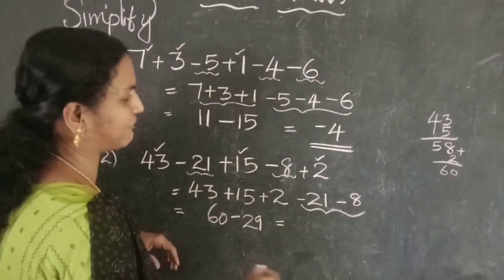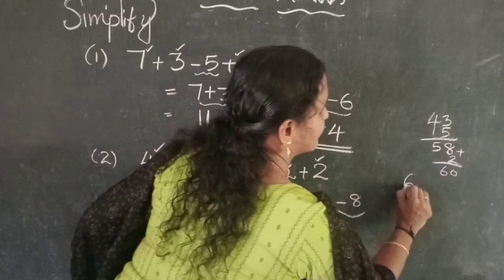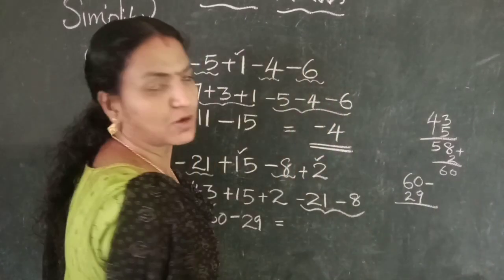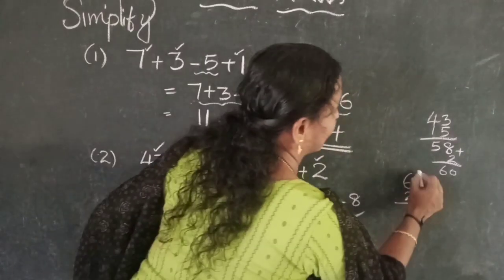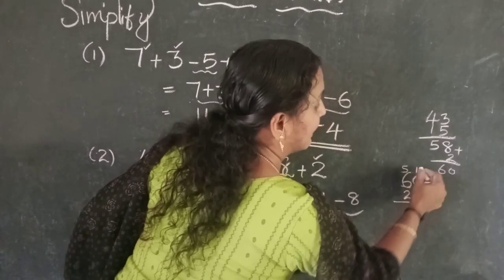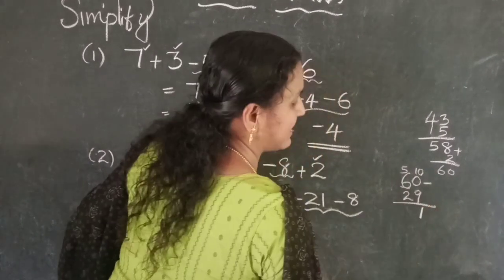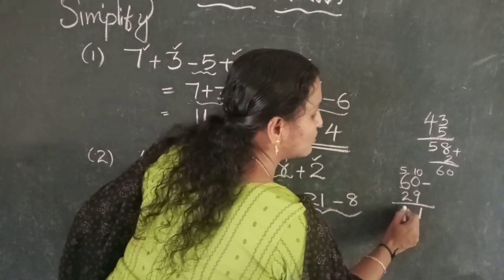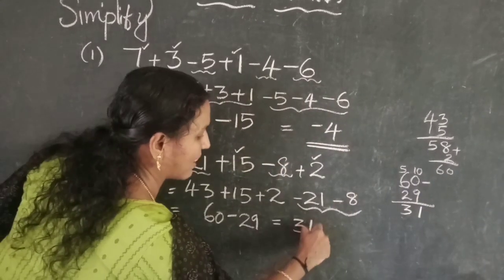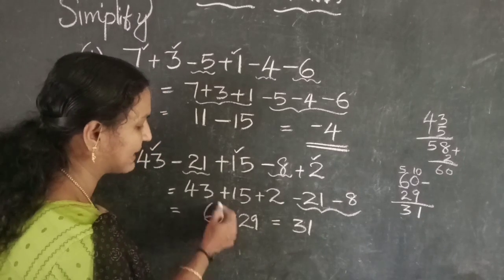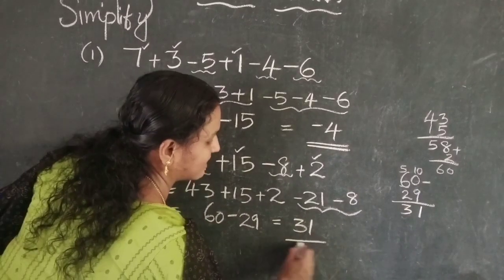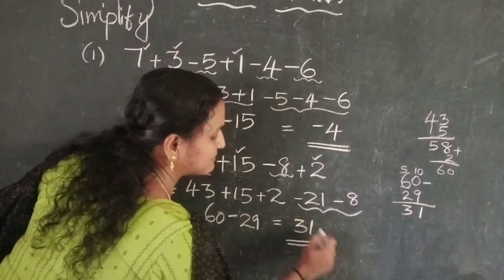Take the difference: 95 minus 29. Here 5 minus 9 is not possible, so borrow: 15 minus 9 is 6, and 8 minus 2 is 6, giving 66. The bigger number is positive, so the answer is plus 66.